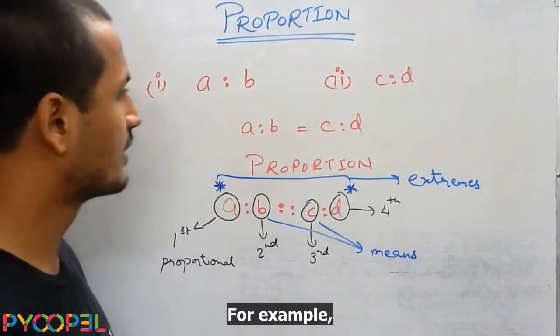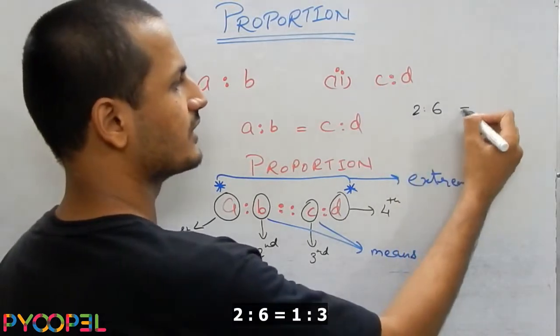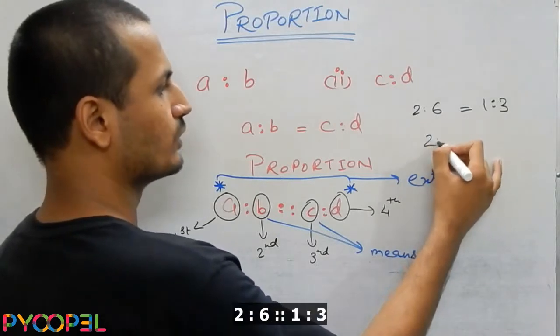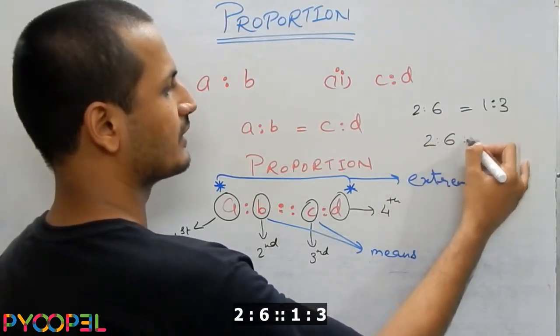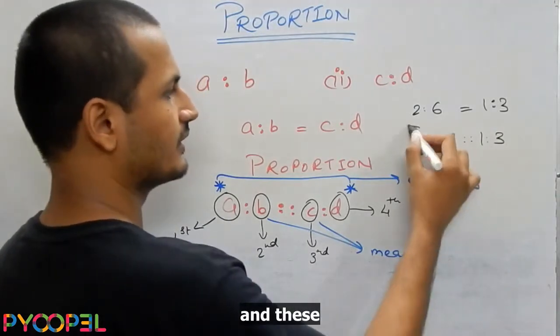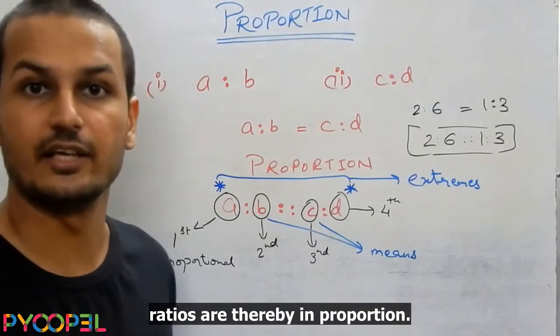For example, 2 is to 6 is equal to 1 is to 3. Thus 2 is to 6, 1 is to 3 and these ratios are thereby in proportion.